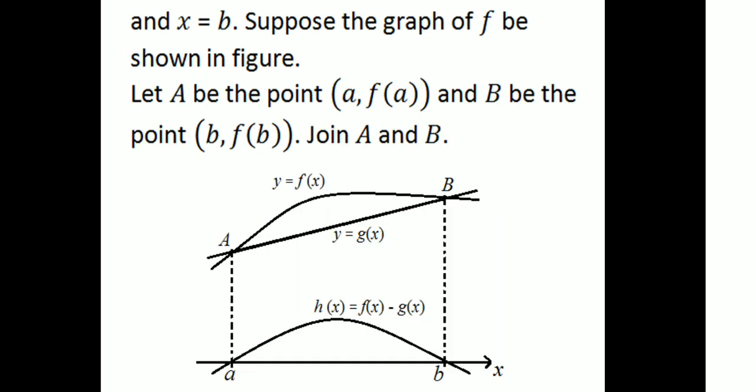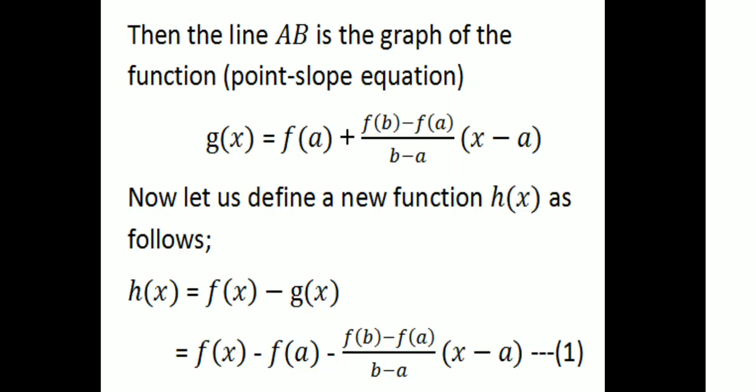Using the point-slope equation, with point (a, f(a)) and slope equal to [f(b) − f(a)] / (b − a), the point-slope equation is y − y₀ = m(x − x₀). So g(x) = f(a) + [f(b) − f(a)] / (b − a) · (x − a).